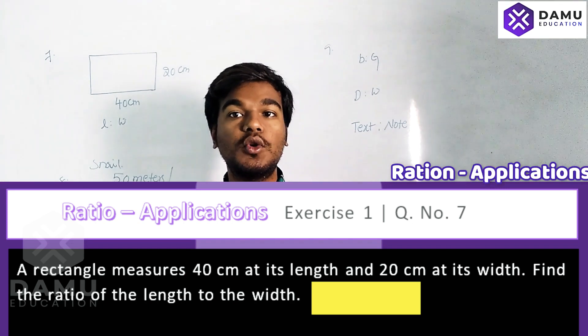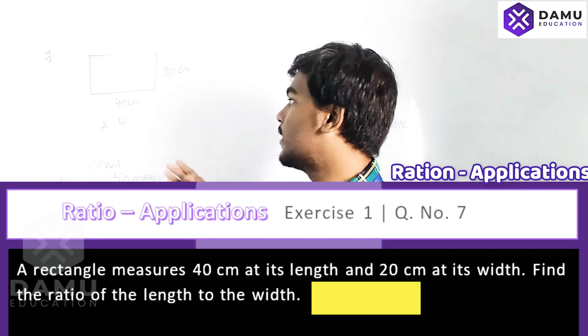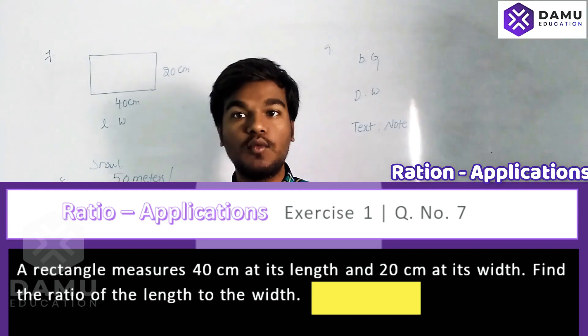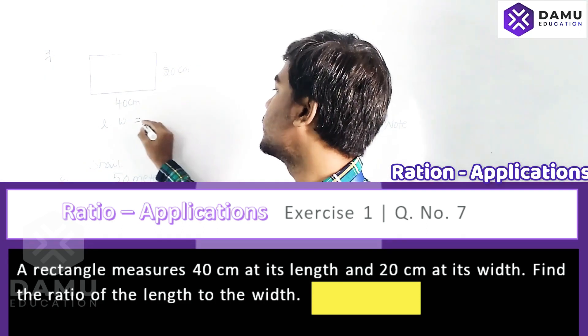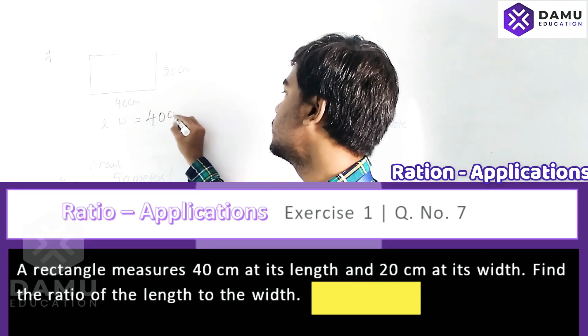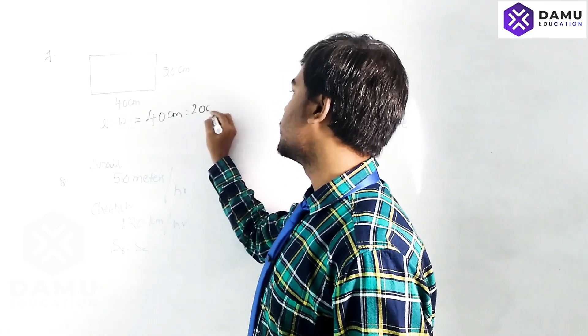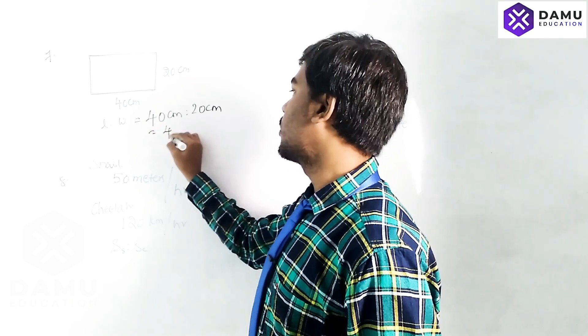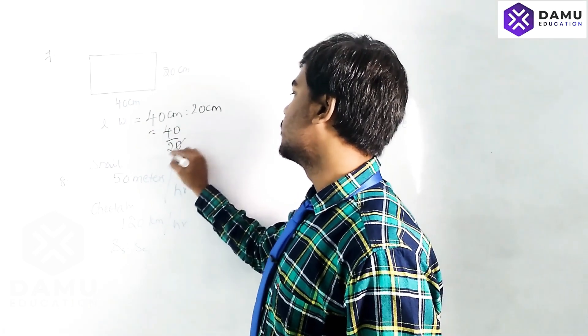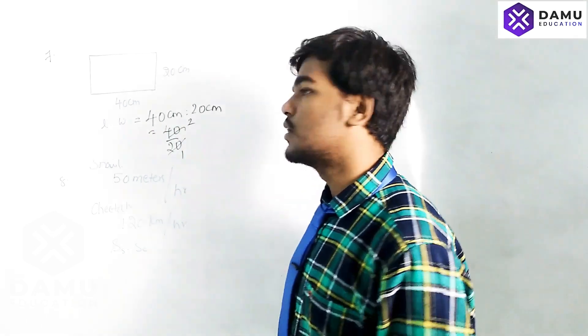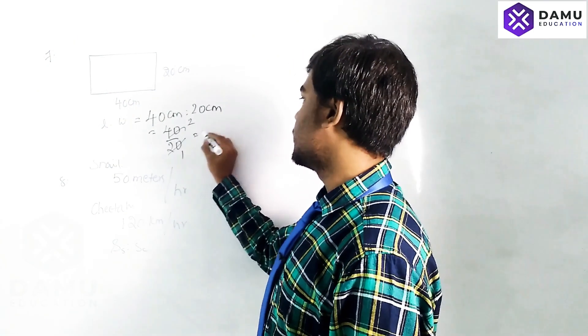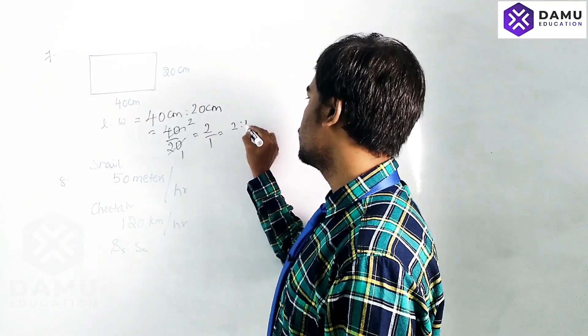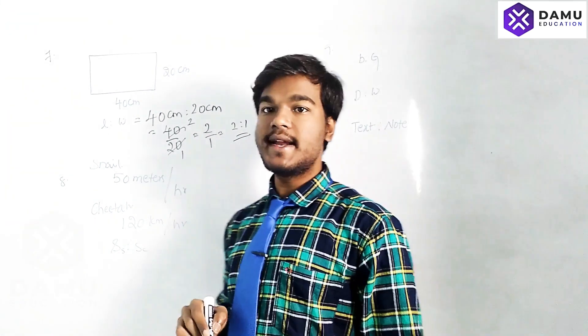So what is the length? 40 centimeters. And the width is 20 centimeters. The ratio of length to width is 40 centimeters to 20 centimeters. That will be 40 by 20. Dividing by 20, that is 2 by 1, or 2 is to 1.